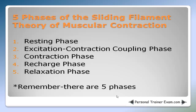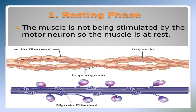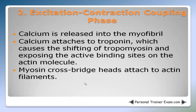The first phase is the resting phase. In the resting phase, the muscle is not being stimulated by the motor neuron, so the muscle is at rest. When the muscle is at rest, the actin filament, which has troponin and tropomyosin attached to it, is not going to be binding with the myosin globular heads.